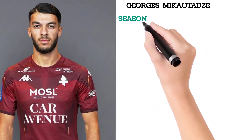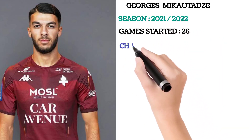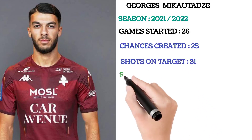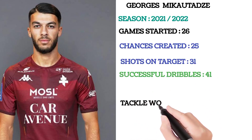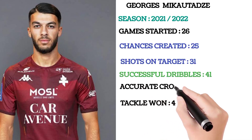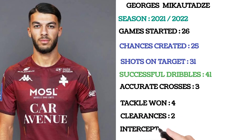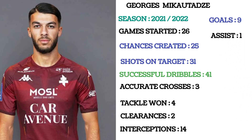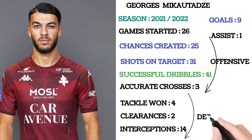In the 2021-2022 season: games started — 26 (good); creating chances — 25 (good); shots on target — 31 (good); successful dribbles — 41 (very good); tackles — 1; accurate crosses — 3; clearances — 2; interceptions — 14 (good). Goals scored: 9; assists: 1. These are the offensive attributes of the player. He has fewer defensive attributes, confirming he is an offensive-type player — that's why he's a striker.